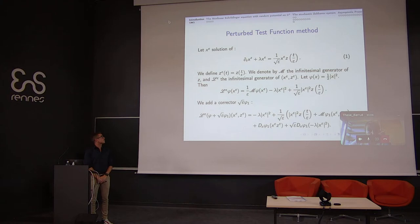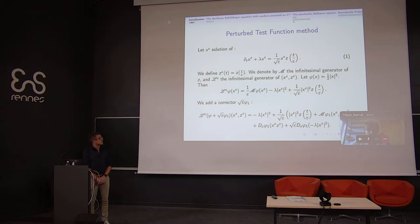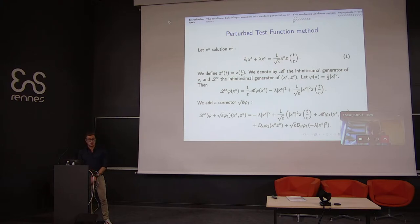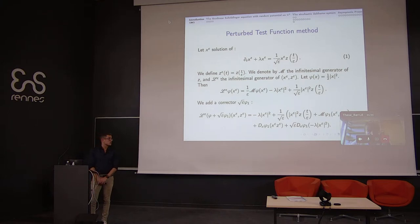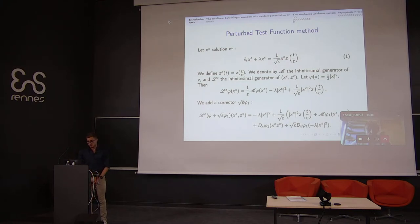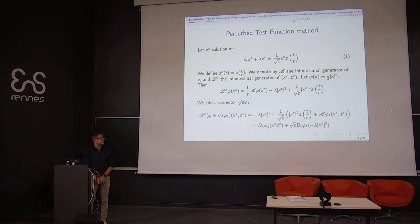Let us apply the generator L-epsilon to a specific function phi, written on the slide. We get an expression where the first term equals zero because phi does not depend on the process z. However, the last term introduces a singularity in epsilon of order minus one half, so we need to add a corrector phi-1. Applying this generator to phi plus square root of epsilon times phi-1, we recover another expression in which choosing the right phi-1 will allow us to make this singularity vanish.